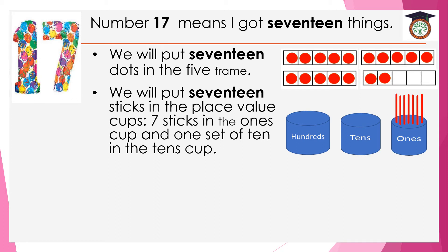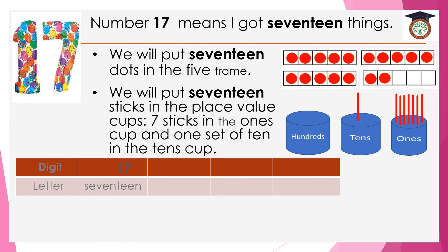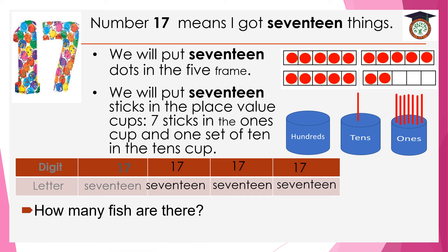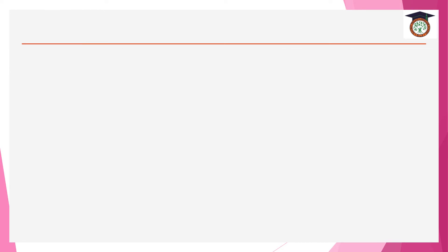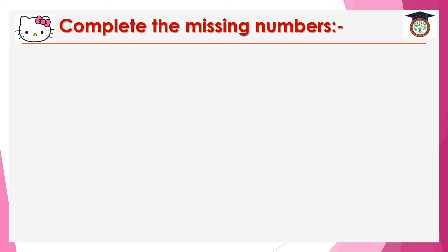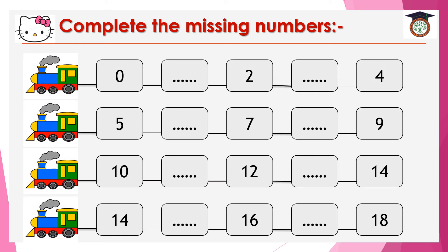Now write 17 in digits and in letters. Let's do the exercise — how many fish are there? Let's count the fish. There are 17 fish. Now we can complete the number 17.